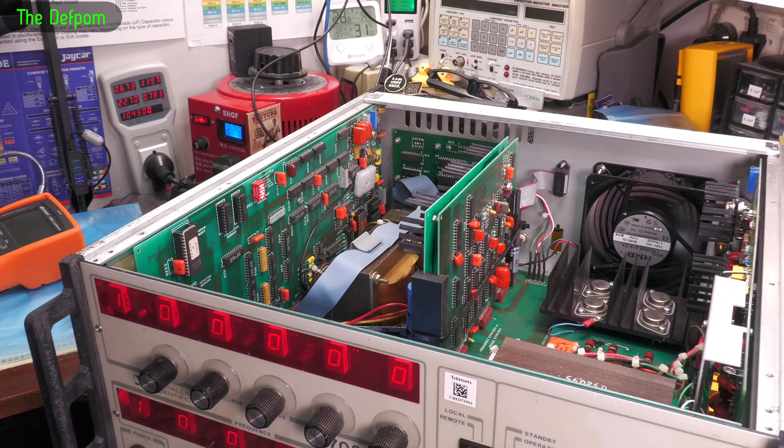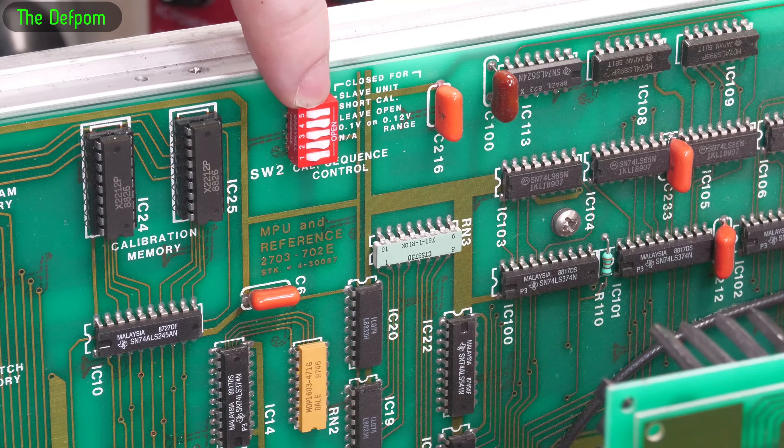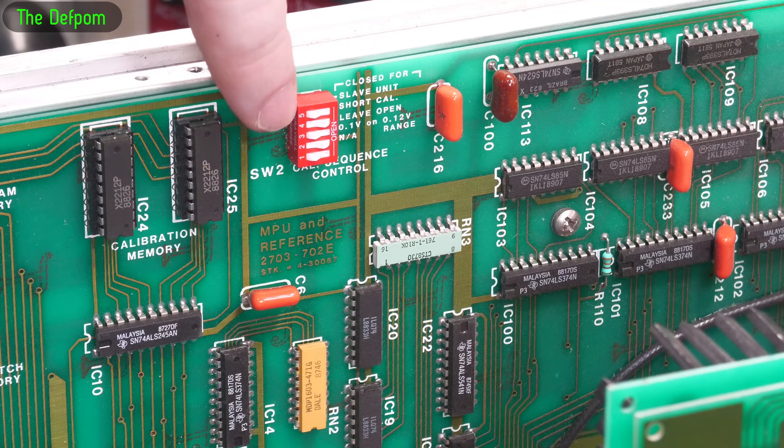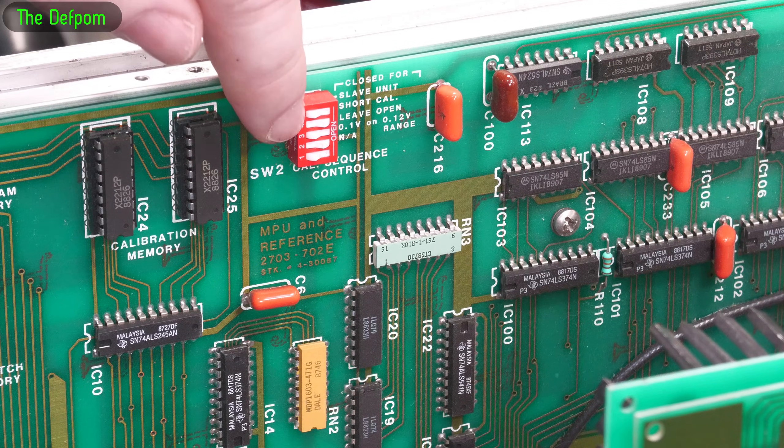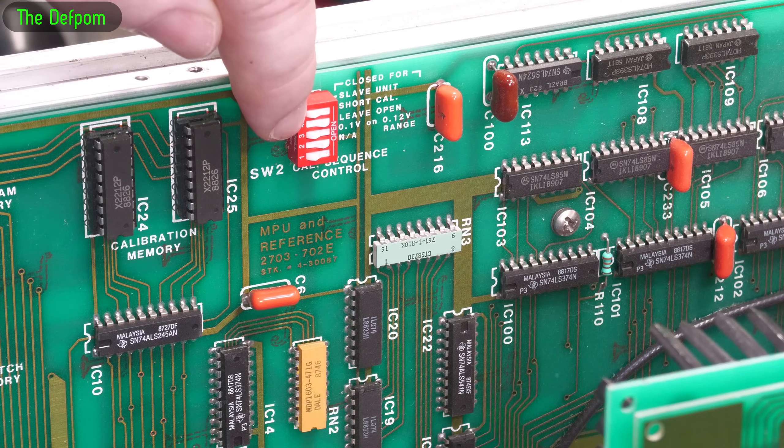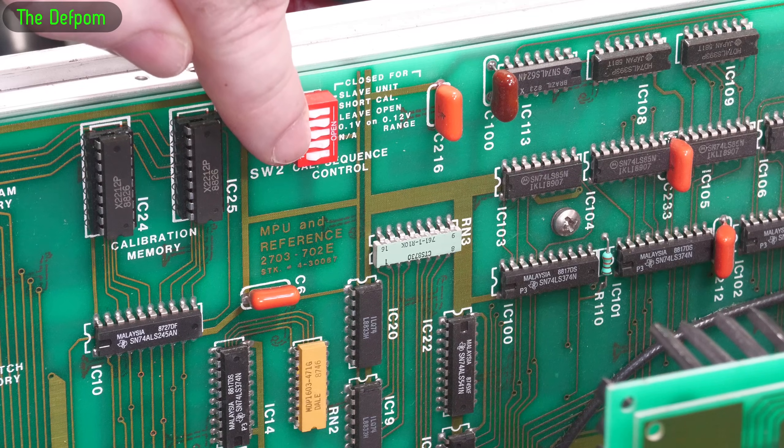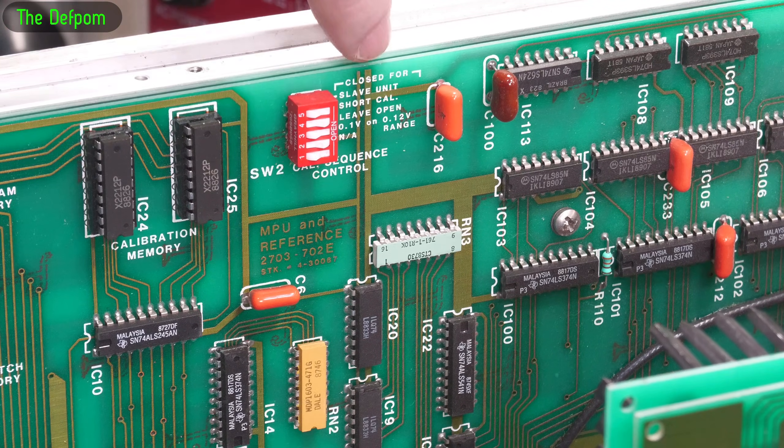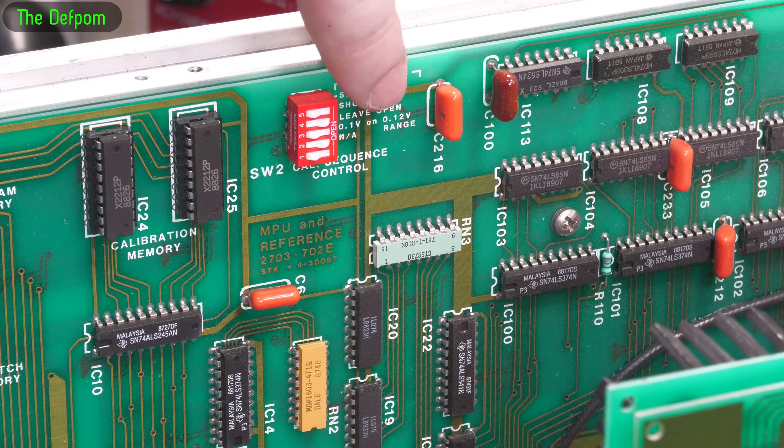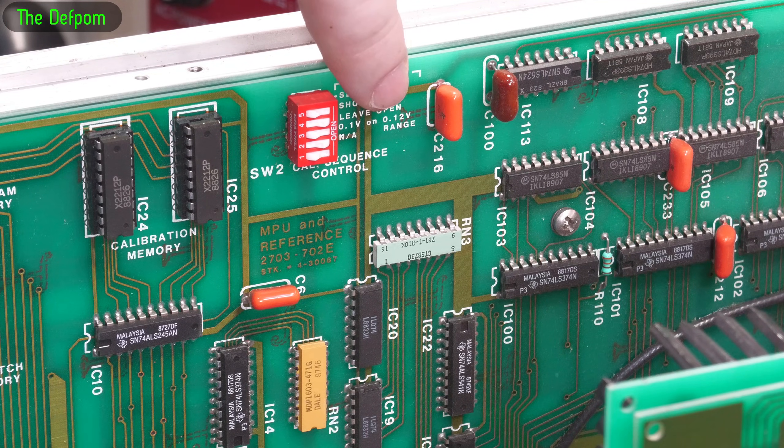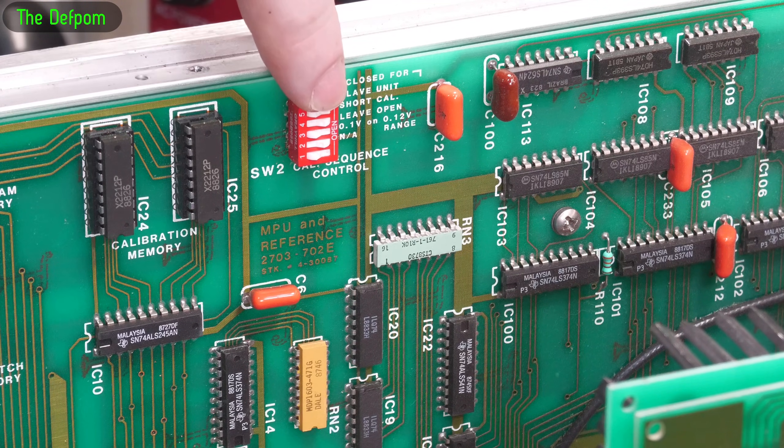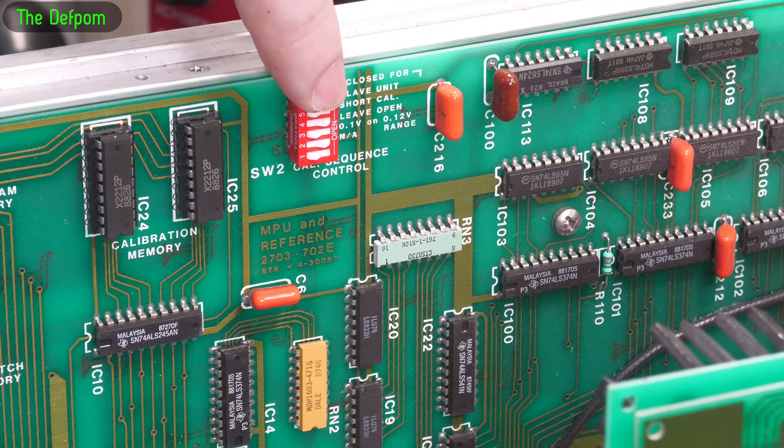Previously when I was doing the original repairs on this thing, I had 3D printed handles for it because it was all broken when I got it. There's a DIP switch just over here. Slave unit in this case should always be open. Short cal is closed. This is what I've been doing, short cal. That's five steps, one for each voltage range. Otherwise you leave it open. This other one here, which is currently closed, that's 0.1 volts on a 1.2 volt range.